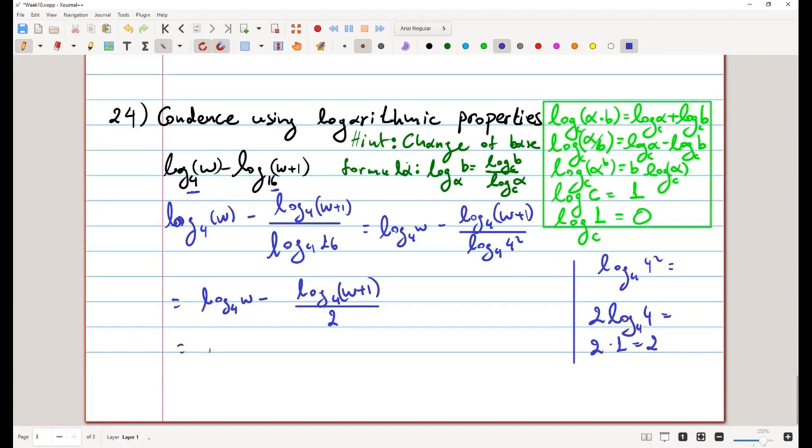Now, it's seemingly there's nothing more we can do. But any division by a given number can be seen as a multiplication by 1 over that number. So I can see the division by 2 as multiplication by 1 half. The reason I want that is I want to write it as a coefficient in front of the logarithm, so I can use the third property from right to left.